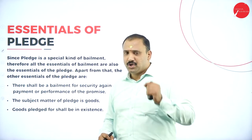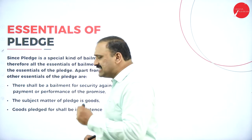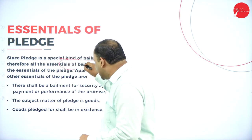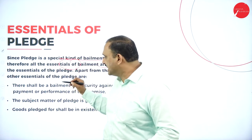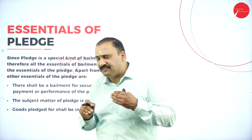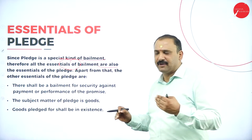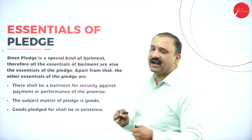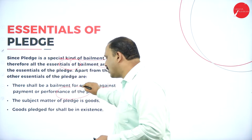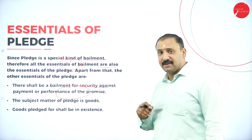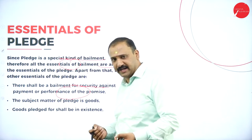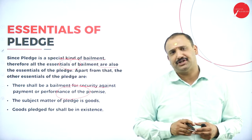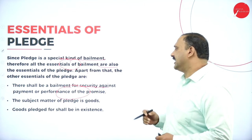Since pledge is a special kind of bailment, all the essential elements of bailment apply. The essentials of pledge include: there shall be a bailment for security against the payment or performance of a promise. Once payment is made for the debt — by keeping gold or a precious instrument as pledge — bailment is achieved.